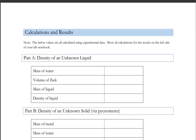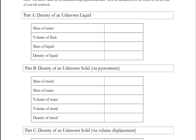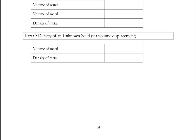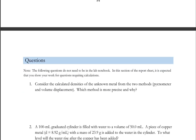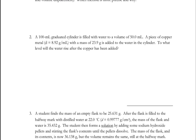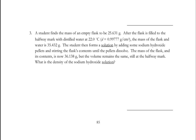For the calculations for the unknown liquid, put those in Part A. For the unknown solid — the metal — put that in Part B and Part C. There are also some questions. Once you have run through all the report information and filled that all out, do your scan, make sure it's a PDF file, and then submit it.